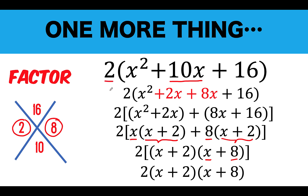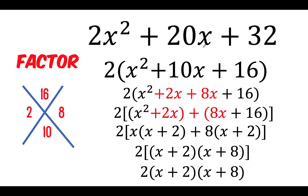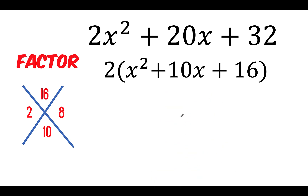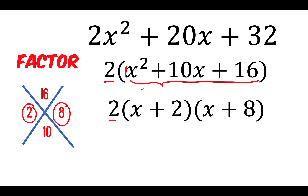So the complete factored form of 2x² + 20x + 32 is 2(x + 2)(x + 8). Using method 2 with the same factor pair 2 and 8, we get the same result directly. For method 3, slide and divide, there's no need here because the coefficient of x² inside the parentheses is already 1 — sliding 1 still gives 1, so the slide and divide method is unnecessary in this case.